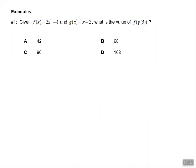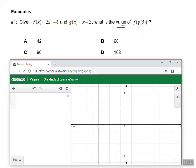So example one says given f of x equals 2x squared minus 8 and g of x equals x plus 2, what is the value of f of g of 5? So let's pull up our Desmos calculator. And if you don't have your Desmos calculator yet, please make sure you pull that up. I'm going to define f of x. So I'm simply going to type f of x equals and it's 2x squared minus 8. 2x squared minus 8. So that's f of x.